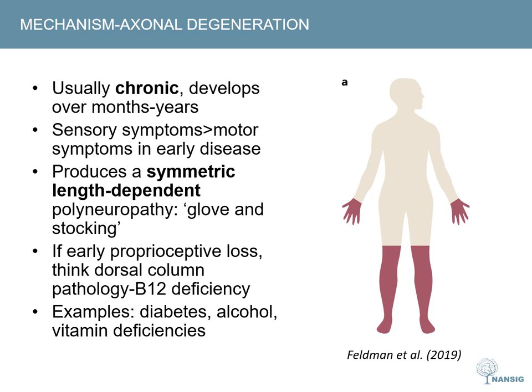The longest nerves supply the distal extremities — the feet — and then gradually the sensory loss progresses. When it reaches the level of the knees, the hands will start to be affected too. This is demonstrated in the diagram, and the distribution of sensory loss is what is known as the glove and stocking distribution. This is classically how diabetic polyneuropathy will present.